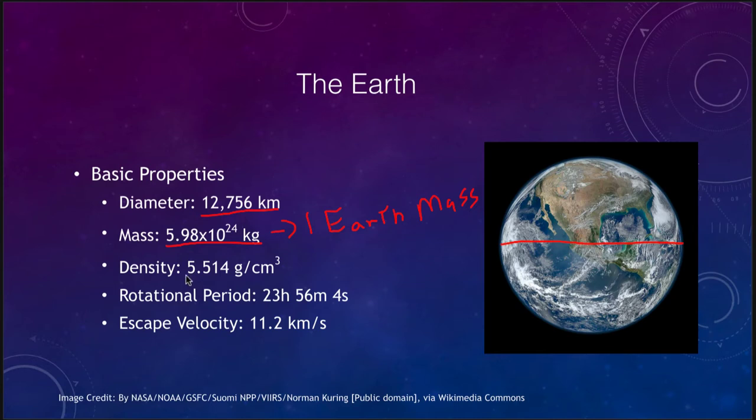And the density of the Earth is about 5.5 grams per cubic centimeter. That means that the Earth is made up of a mixture of rock and metal. So looking at the density, we can learn something about the interiors, and we can use that to compare other objects as well.